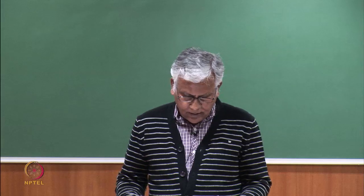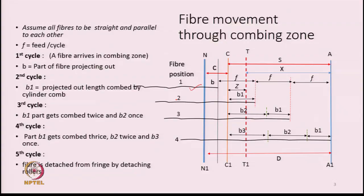In the second cycle the same fibre moves forward by an amount F, because F is the length fed every time. The operation is always discontinuous — the fibre moves in steps, each step of length F. In this second cycle, the part of the fibre length crossing the line CC1 is B1. So B1 is the projected-out length which will be combed by the cylinder comb in the second cycle. The rest of the part of the fibre will remain uncombed.